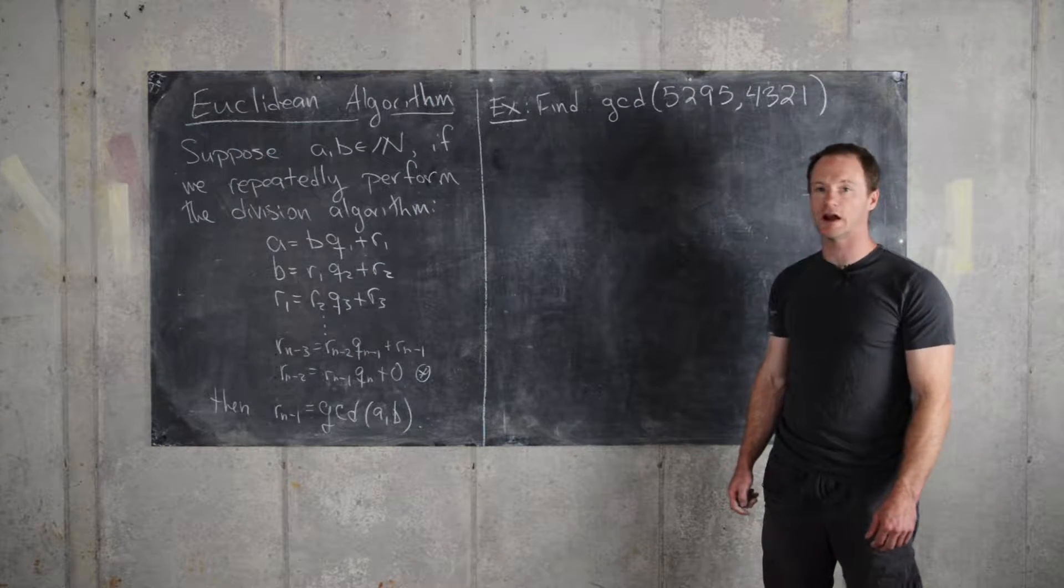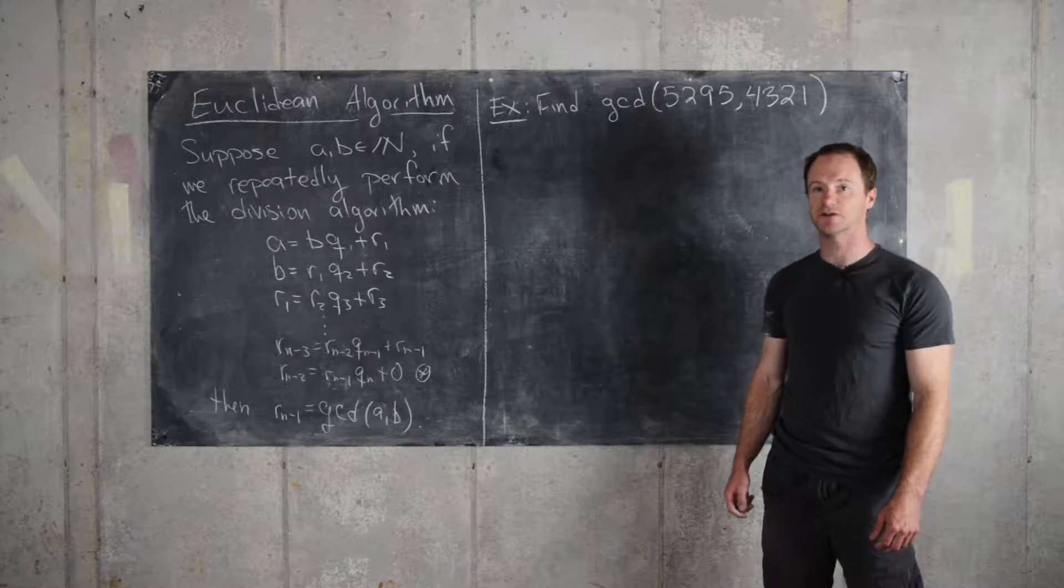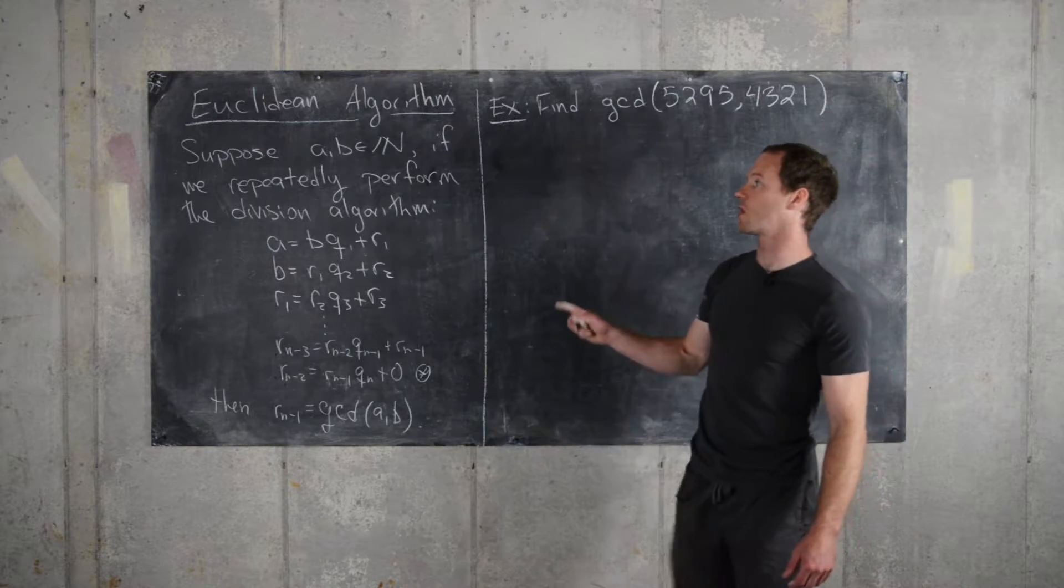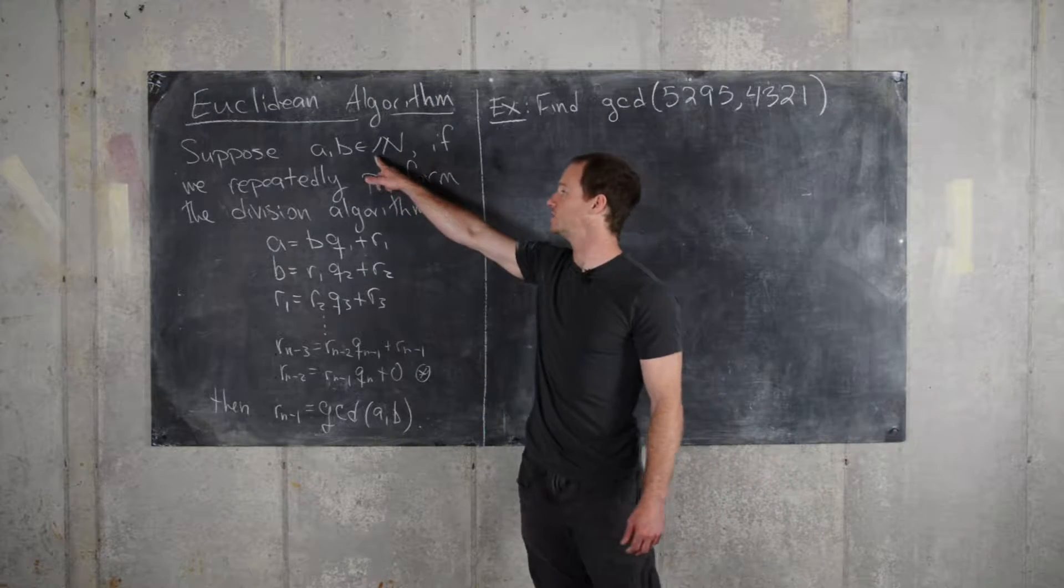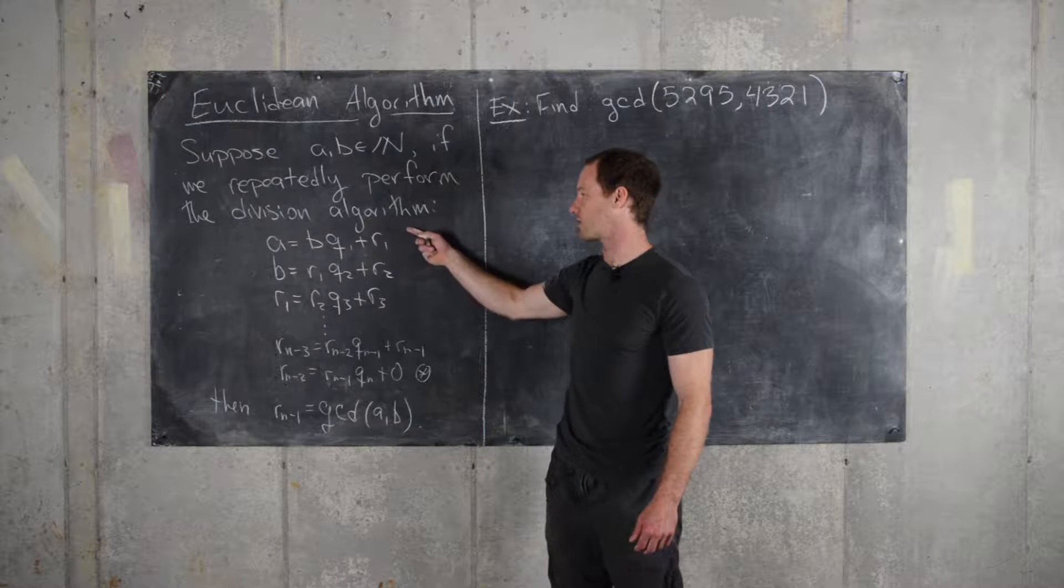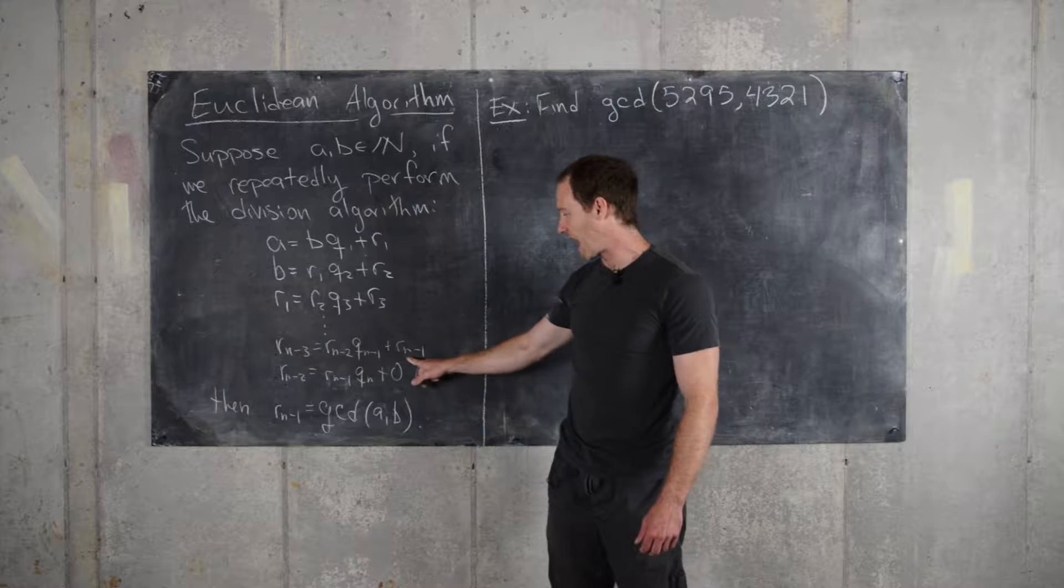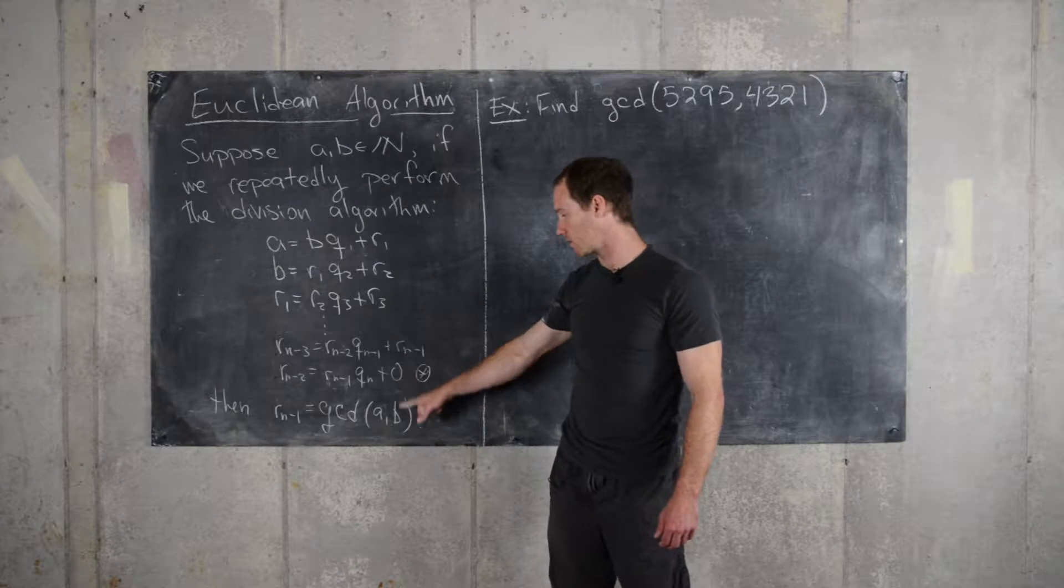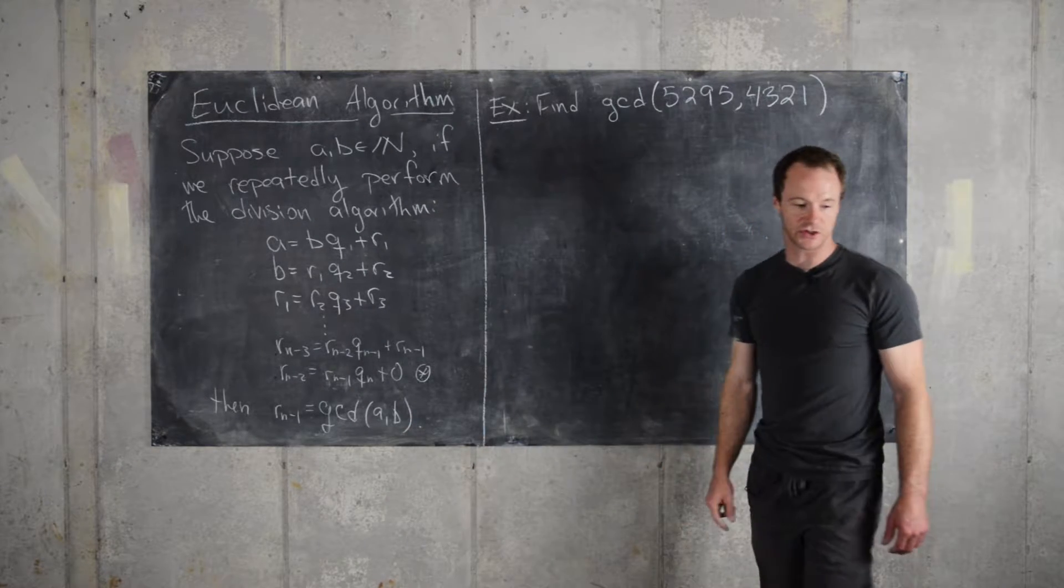Here we'll do an example of the Euclidean algorithm to find the GCD of two natural numbers. So let's just recall the Euclidean algorithm. If we have two natural numbers and we repeatedly perform the division algorithm as follows, then the last non-zero remainder will be the GCD of the original two numbers.